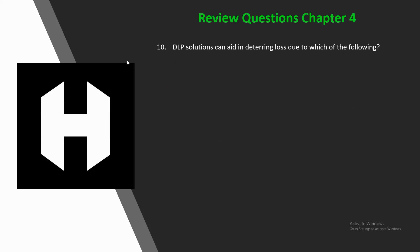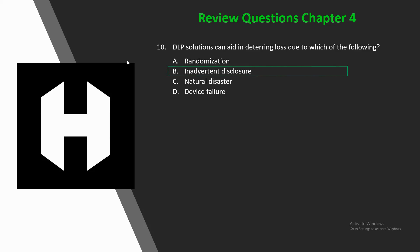Question 10: DLP solutions can aid in deterring loss due to which of the following — A) randomization, B) inadvertent disclosure, C) natural disaster, or D) device failure? The answer is B, inadvertent disclosure, because randomization is a technique for obscuring data rather than a risk to data, and DLP tools will not protect against natural disasters or device failure.